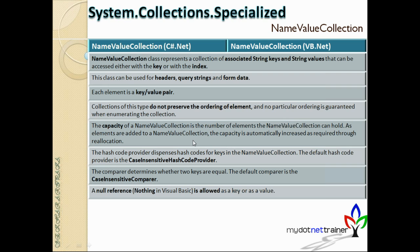The hash code provider for NameValueCollection dispenses hash codes for keys. The default is the case-insensitive hash code provider, meaning key lookups are case-insensitive by default. This is another characteristic that distinguishes it from other collection types.